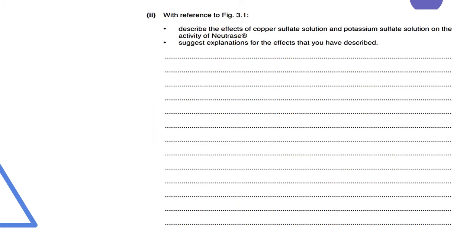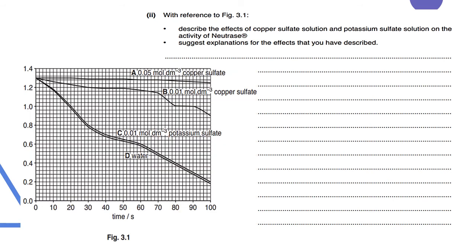Now, the question that I believe you all want an answer to, that Amira might have been struggling with. It says describe the effects of copper sulfate solution and potassium sulfate solution on the activity of Neutralase, and suggest explanations for the effects you have described. So now I haven't looked at the mark scheme. My students and I did this in class before the exams. So we already said that this is absorbance on the y-axis. These are absorbance values and these are four different solutions.